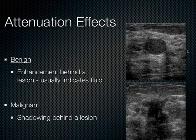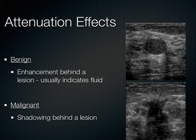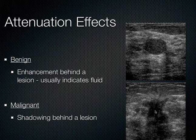Another difference is the attenuation effects. With a benign mass, because it's not as dense, sound can penetrate through it and you get posterior acoustic enhancement — similar to the bladder or gallbladder, where behind those organs it looks more hyperechoic. That's similar to what's going on with the benign mass. Compare that to the malignant mass, where there's shadowing posteriorly. The sound is attenuated much more in a malignancy, mostly because of its density, and sometimes micro-calcifications also cause more shadowing.